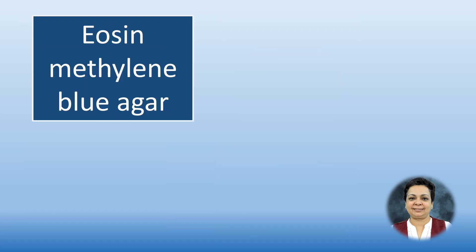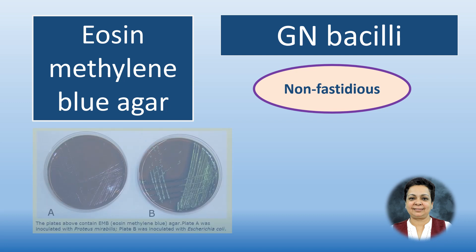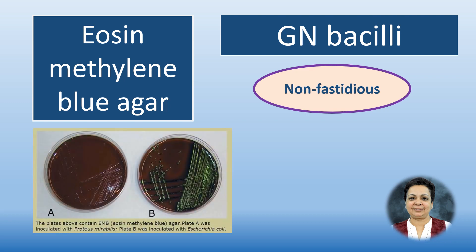Instead of MacConkey, some people prefer to use Eosin Methylene Blue agar, or EMB agar. The purpose is the same — mildly selective for non-fastidious gram-negative bacilli, and also a differential medium. Non-lactose fermenters produce pale colonies, lactose fermenters produce purple colonies, and some may produce a greenish metallic sheen around the purple colonies.